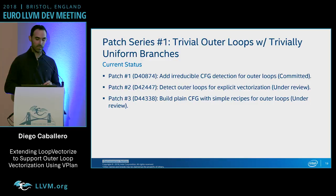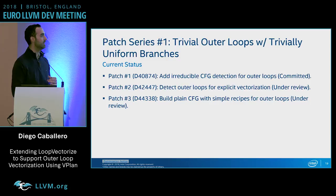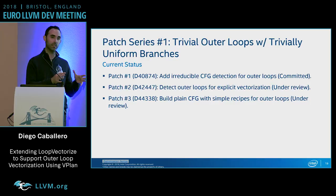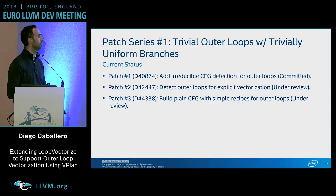This is the current implementation status. We have three patches. The first was already committed and extends reducible CFG detection to outer loops. The second implements detection of all the supported outer loops with the mentioned constraints. The third introduces the technology to build the initial CFG in vPlan. I encourage you to look at the patches — all feedback is appreciated.